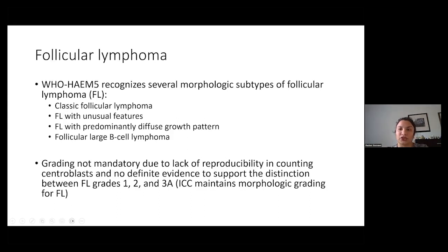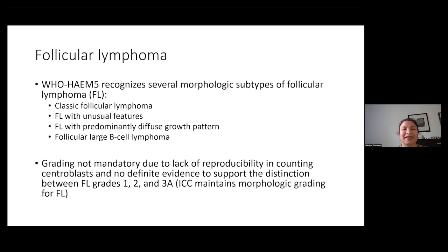Now moving to another very common category: follicular lymphoma. The WHO fifth edition recognizes several morphologic subtypes. There's the classic follicular lymphoma we've come to know through experience. They've added new entities: follicular lymphoma with unusual features, follicular lymphoma with a predominantly diffuse growth pattern, and finally follicular large B cell lymphoma. The WHO does not make it mandatory to grade, stating this is because of a lack of reproducibility in counting centroblasts. There's also no definitive evidence to support the distinction between follicular lymphoma grades one to three A.